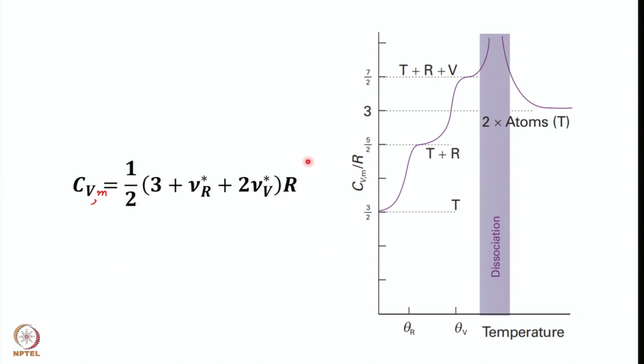This equation gives a very good estimate of constant volume heat capacity as long as the temperature is much above the relevant characteristic rotational or vibrational temperature. If the temperature is much lower than the characteristic vibrational temperature — meaning the vibrational mode is not active — then you can put ν_V* equal to 0.